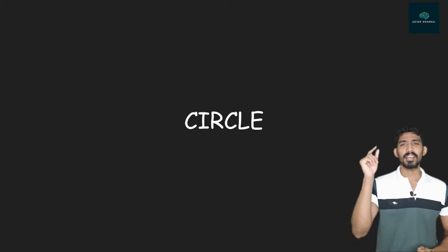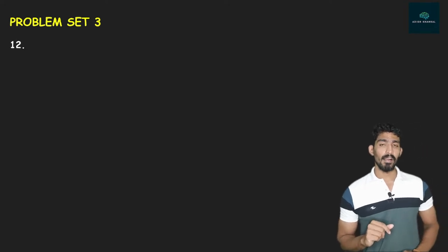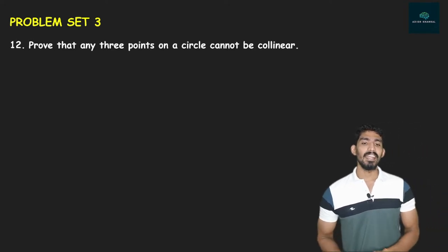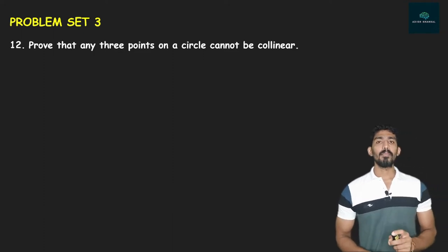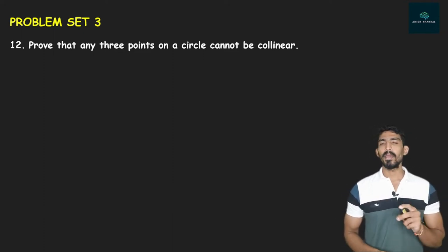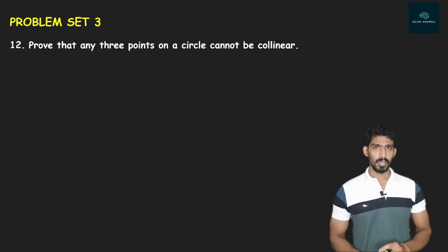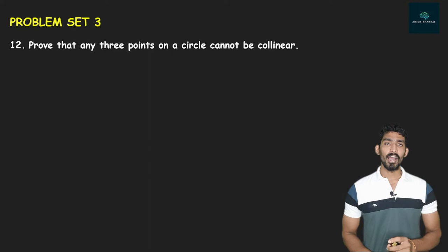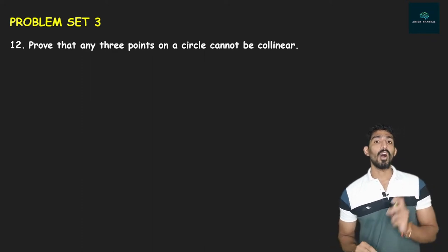The first question, boys, is something that doesn't directly relate to any theorem. It is Problem Set 3, Question Number 12: prove that any three points on a circle cannot be collinear. If you have a circle and you take three points, those three points will not be collinear. Collinear's definition — I hope everyone knows — is that if you have three points, then a single straight line must pass through all three points.